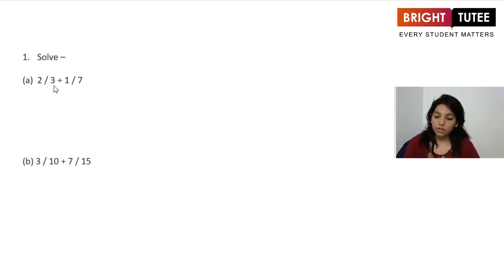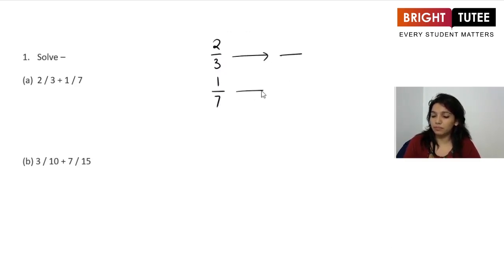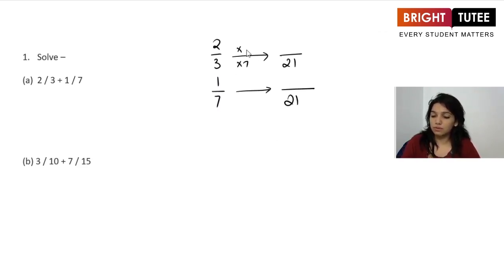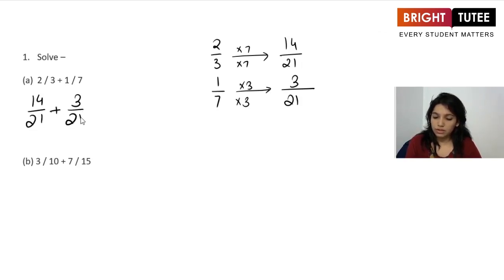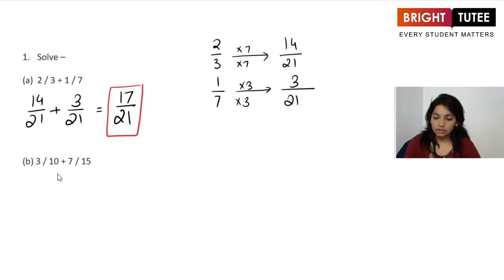Starting with 2/3 plus 1/7. The first step is to work out the fractions with the same denominator. The LCM of 3 and 7 is 21. Writing them with denominator 21: 3 times 7 and 7 times 3 gives 21, so we get 14 and 3 at the numerators respectively. So 14/21 plus 3/21 — adding the numerators gives 17/21. That is our answer.